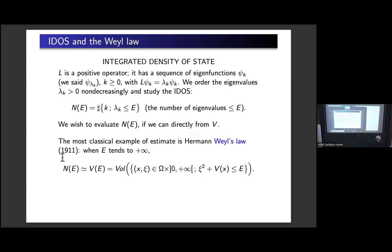The main subject of the lecture was supposed to be the integrated density of states. The integrated density of states is just a way of counting how many eigenvalues there are up to level E, or lambda. This is the number N(E) — number of eigenvalues less than E. Imagine you've taken a very large domain so that this number is large, and you want to evaluate it.